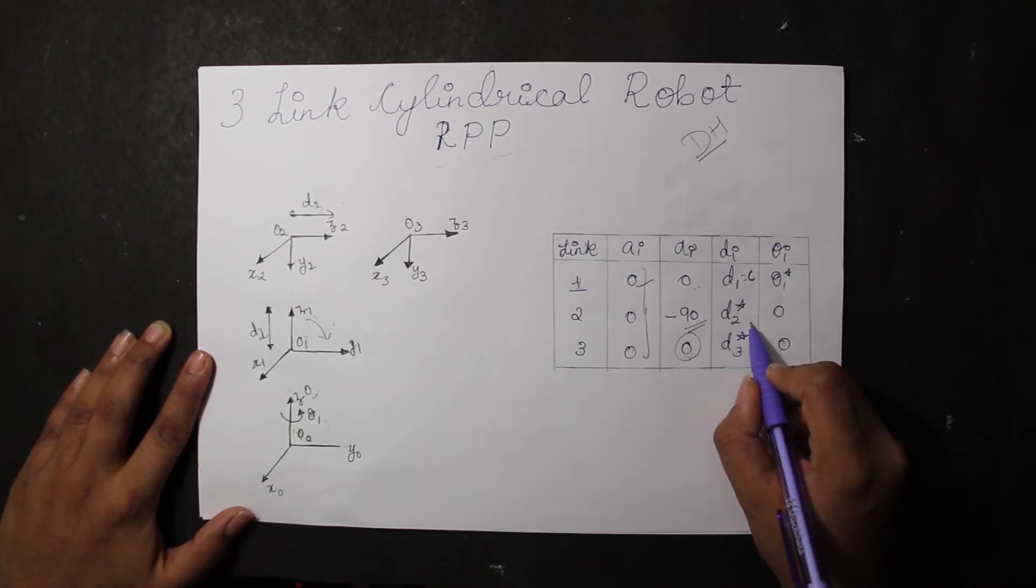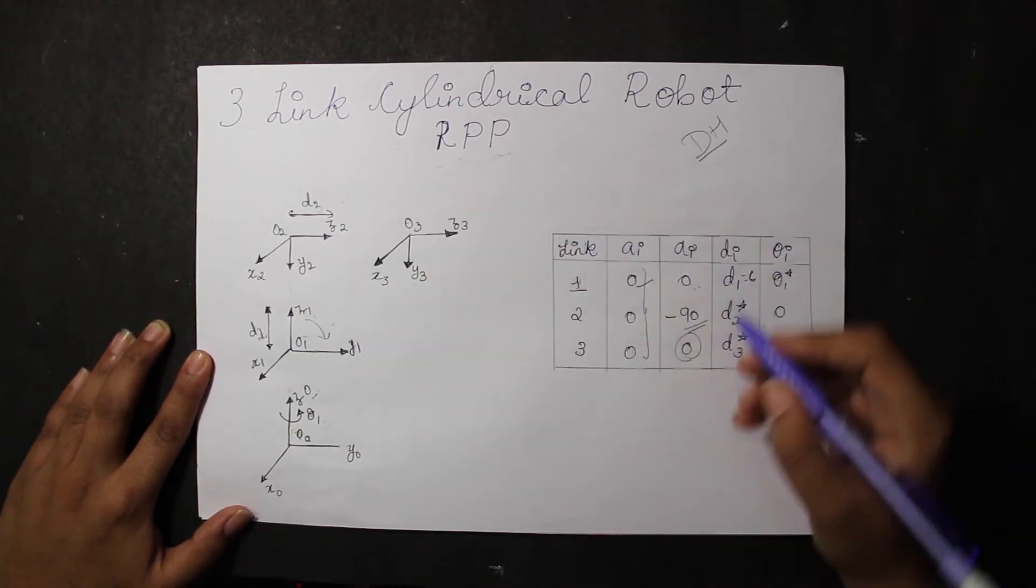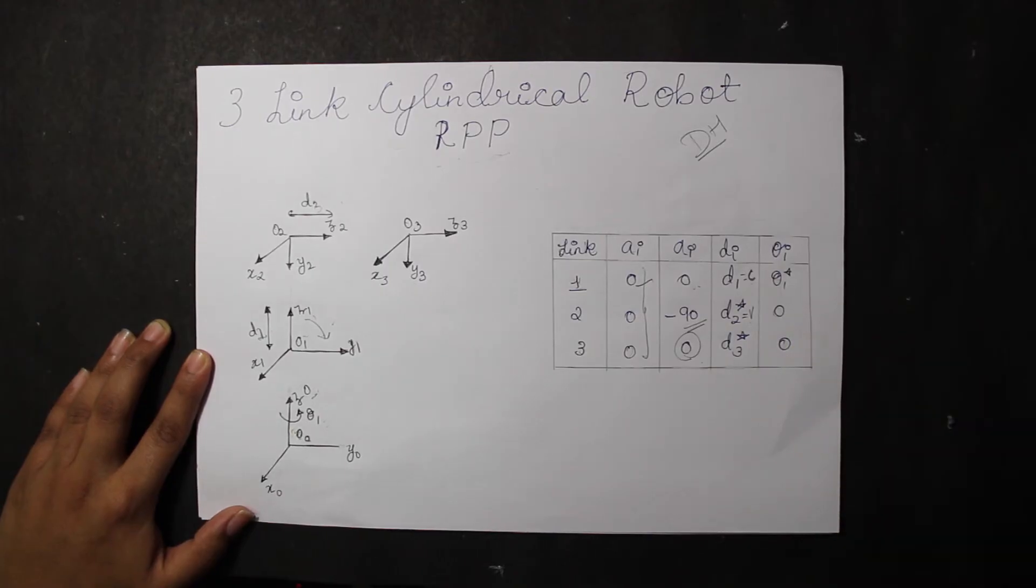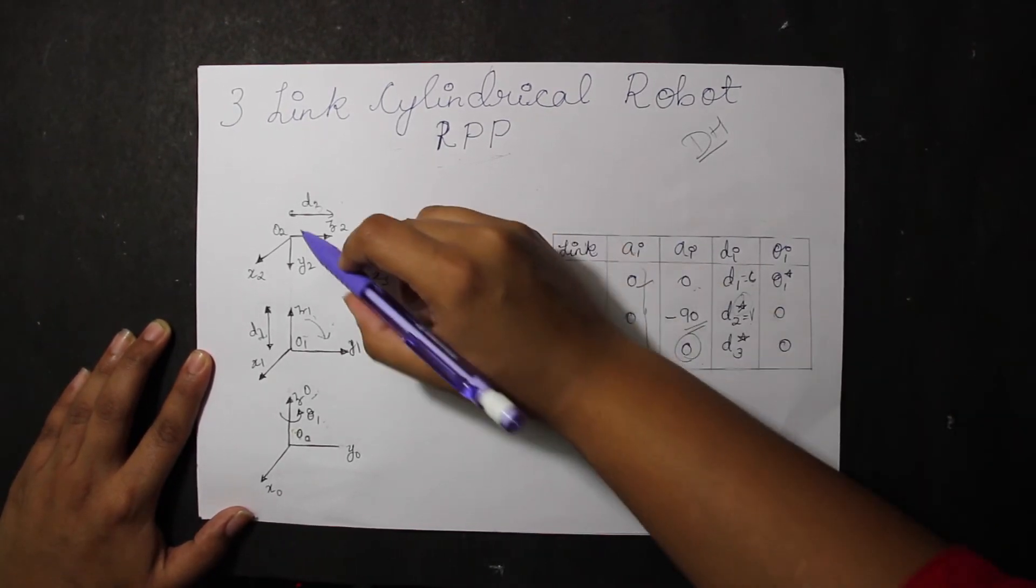Since the second link has a prismatic joint, we have D2 value and since it is variable, since it's moving, we star mark it. Similarly, for the third link we have D3 and it's star marked because it's a prismatic joint and again it's a variable.